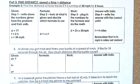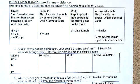For Part 3 we're finding distance. To find distance we multiply — so far we've only divided to find time and speed. When finding distance, we need to multiply, but the steps stay the same.